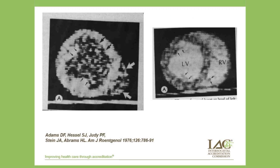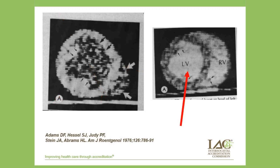Here are very early CT images published in 1976, almost 40 years ago, obtained by scanning excised heart specimens. Notice the extreme pixelation and limited detail. Notice the low cavity attenuation against the much higher attenuation of the non-enhanced myocardium. The specimen on our right was filled with contrast material before scanning, giving high attenuation of the cavity of the left and right ventricular chambers.